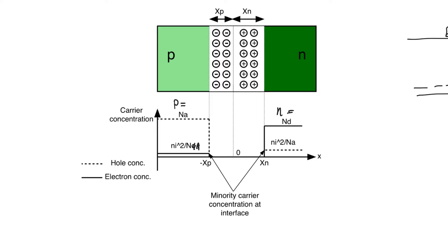Using the mass action law, we can also find the level of holes on the n-side as ni-squared over ND, and we can find the level of electrons on the p-side as ni-squared over NA. We can give subscripts to indicate: this is the level of electrons on the n-side, this is the level of holes on the n-side, this is the level of holes on the p-side, and this is the level of electrons on the p-side.